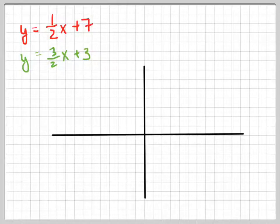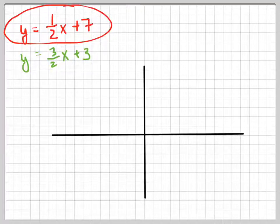They want us to solve this system by graphing. So what we're going to do is graph each line and see where they intersect. Hopefully we'll do a good enough job graphing them that we can see exactly what the solution is by the intersection point. The best way to graph these lines when they're in slope-intercept form is to first graph the y-intercept.